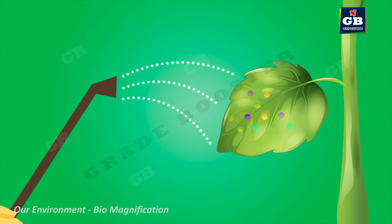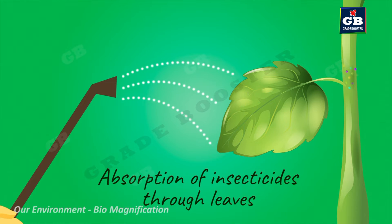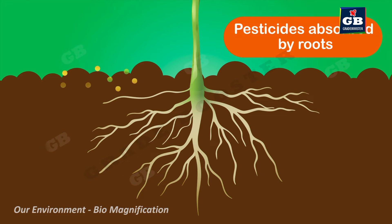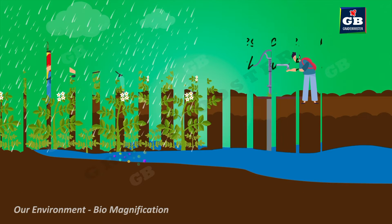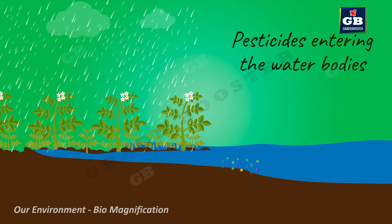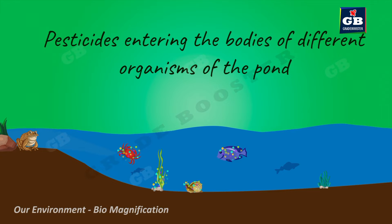The pesticides enter the plant bodies in two ways. One, when the pesticides are sprayed, the leaves absorb the pesticides into the bodies. Two, the insecticides that fall on the ground mix with the soil and are absorbed by the plant roots along with water and minerals. Sometimes the pesticides mixed with the soil seep down and contaminate the groundwater. Sometimes due to heavy rains and floods, these pesticides reach water bodies like ponds and rivers. Then these pesticide and insecticide residues enter the bodies of aquatic plants and animals of that pond. In this way, these chemical pesticides enter the food chains.